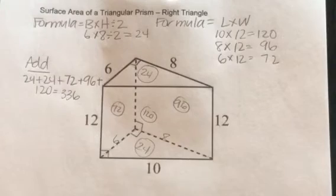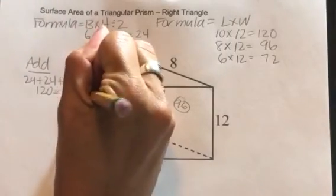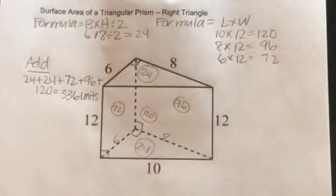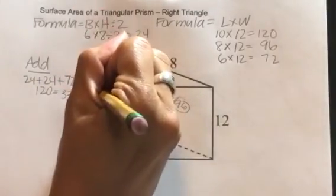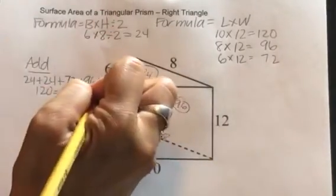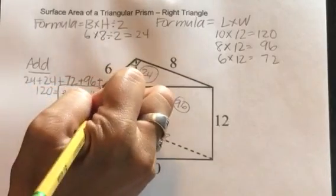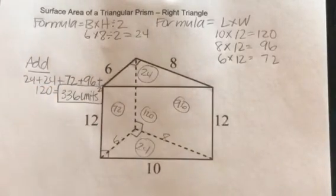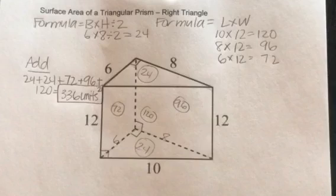So we're going to do 336 units. And since it's area, it still needs to be squared. So then our total surface area is 336 square units.